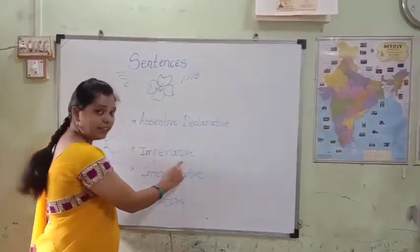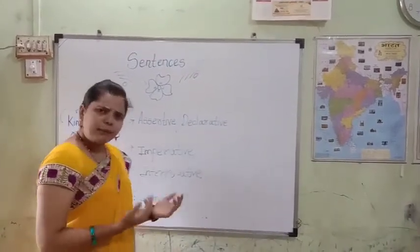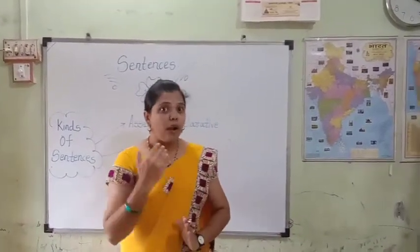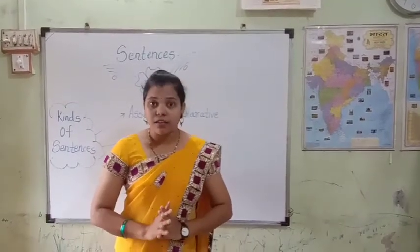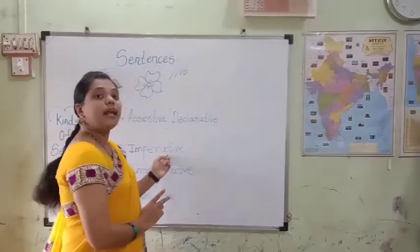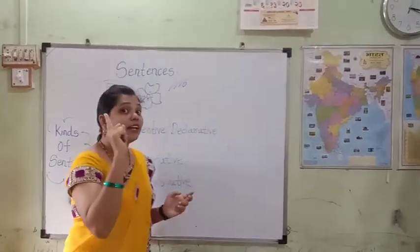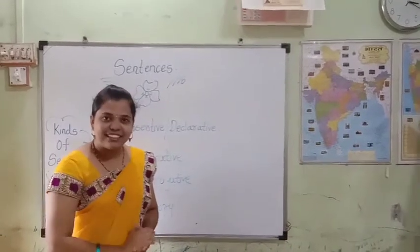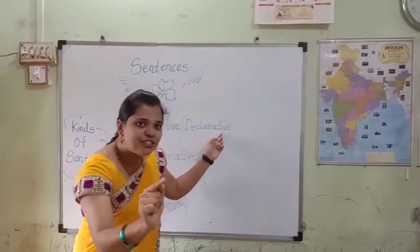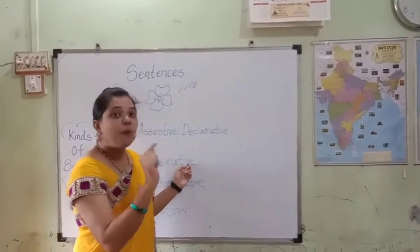Second number sentence: imperative sentence. What is the meaning of imperative sentence? Whenever we are requesting someone, whenever we order someone, or we offer advice to someone, that time we are using imperative sentences. In declarative sentence and imperative sentence, there is one common thing: declarative sentences always end with a full stop, and even imperative sentences are also ended with a full stop.